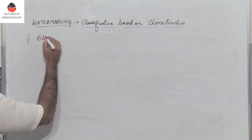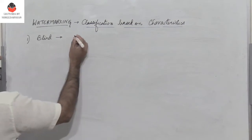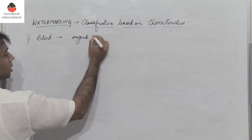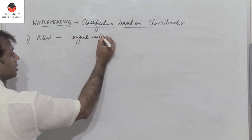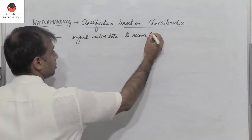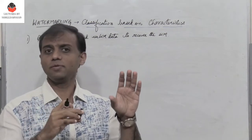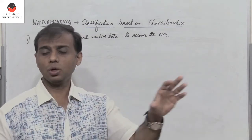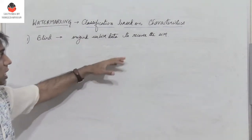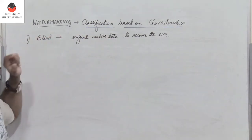In blind watermarking, the technique does not require access to the original unwatermarked data — that is, the host image or host data — to recover the watermark. We have the original unwatermarked data, the watermark is embedded, and we get the watermarked image. If the original unwatermarked data is not required to extract the watermark, such a technique is referred to as blind watermarking, and this is the most widely used.